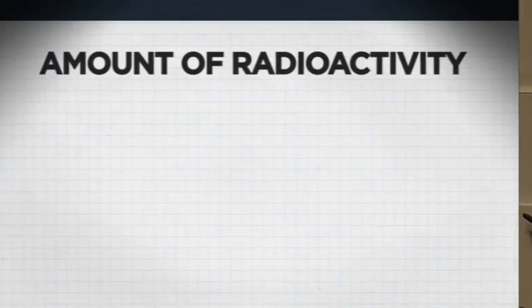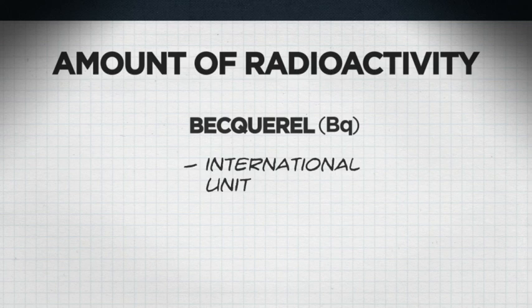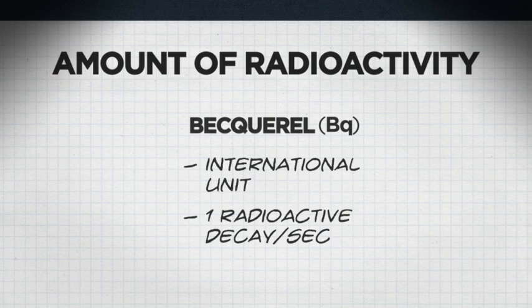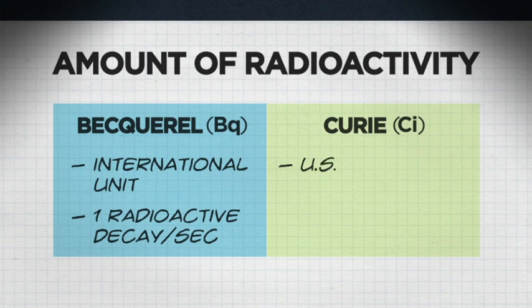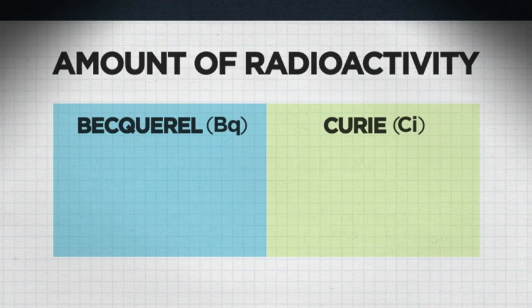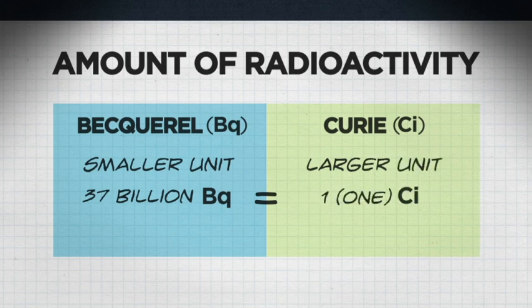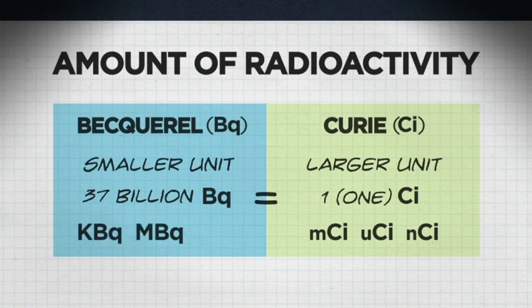To report the amount of radioactivity, the unit we use is the Becquerel — the international unit of radioactivity — representing one radioactive decay per second. An older unit, the Curie, is still used in the United States and is based on the activity in one gram of radium. They measure the same thing on different scales. Becquerel is very small, so it's common to see Kilobecquerel, Megabecquerel, and Gigabecquerel. Curie is large, so we use millicurie, microcurie, or nanocurie.